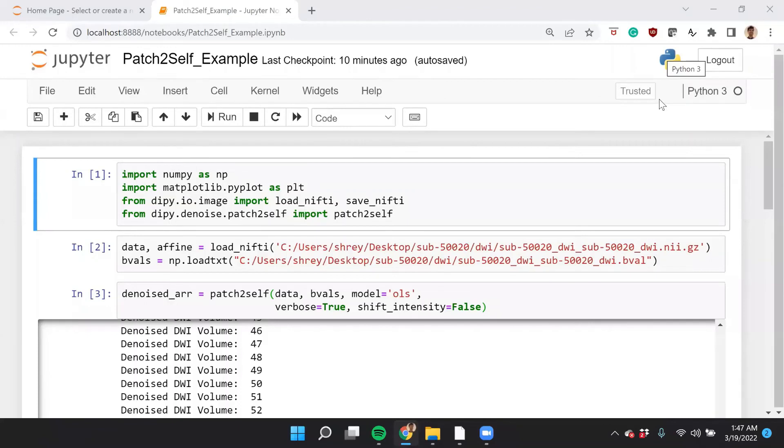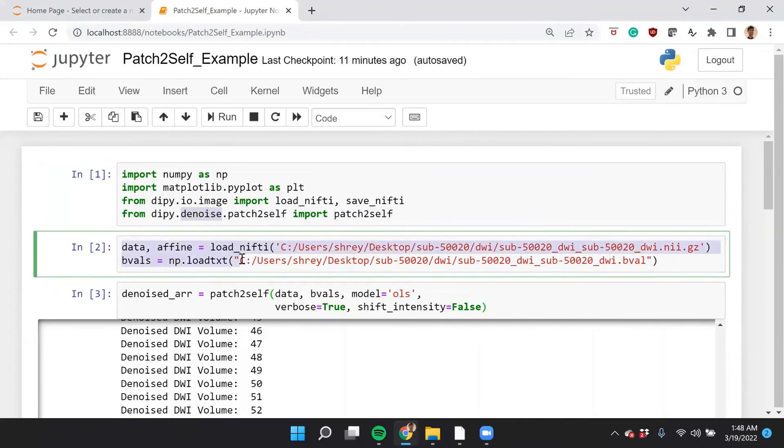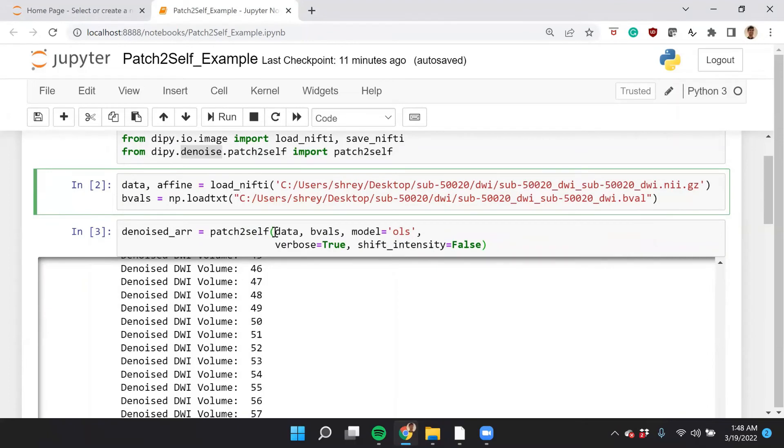Anyway, so enough of explaining the method. Now let's look at the implementation. There are two ways of implementing Patch2Self. You can either use Patch2Self via the Pythonic API, that is via DIPY. And the other way is to use the command line interfaces that we provide within DIPY. Let's first look at the Pythonic API. These are some basic packages that you need for plotting, for executing numerical operations, loading and saving nifty files. Patch2Self is loaded via this module, which is in the denoise module of DIPY. So here, I first load the nifty file and the b-values.